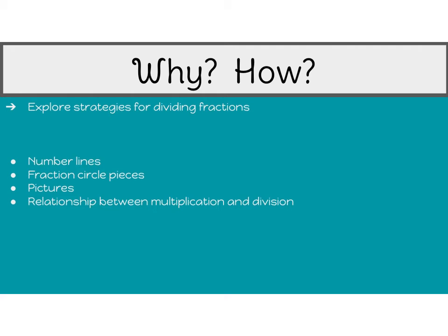Let's start by looking at a picture. Our problem is: three family members equally share one-fifth of a pan of cornbread — how much of the pan will each person get? The first thing we need to do is predict whether the answer is going to be greater than or less than the dividend. Go ahead and pause your video and see if you can think about or draw a picture of what this might look like.